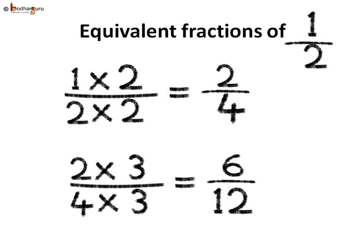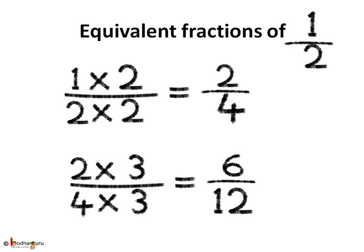How would you find an equivalent fraction of a given fraction? Just multiply both the numerator and the denominator of a given fraction by the same number. Like we saw, half is equal to two by four, because half multiplied by two over two equals two by four. Same way, two by four multiplied by three over three is equal to six by twelve. So we can say two by four is equal to six by twelve.